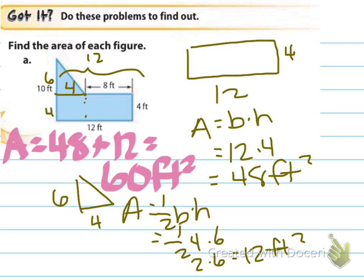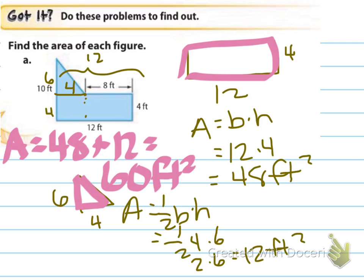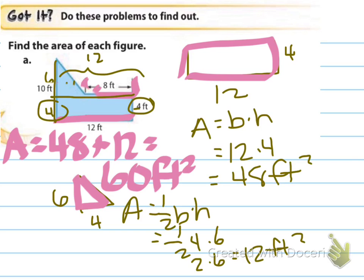The area for A is 60 feet squared. I found the area of the rectangle, which was 12 by 4, giving 48 feet squared. For the triangle, I had to find missing dimensions: the whole bottom is 12, so if one part is 8, the other is 4. Going the other direction, if one side is 4 and the whole thing is 10, this section is 6. So the triangle is 6 by 4: one-half times 6 times 4 equals 12 feet squared. Combining 48 and 12 gives 60 feet squared.